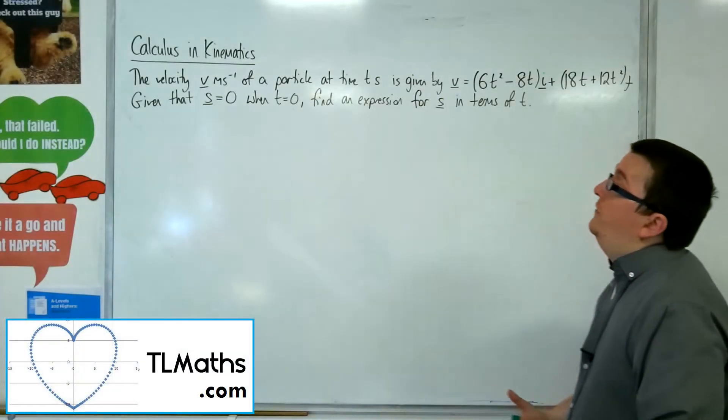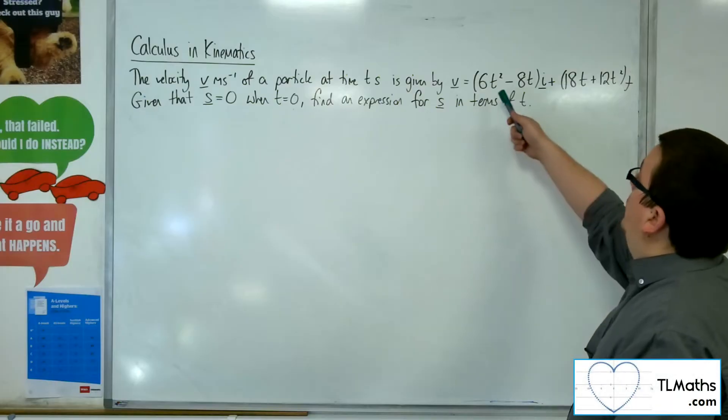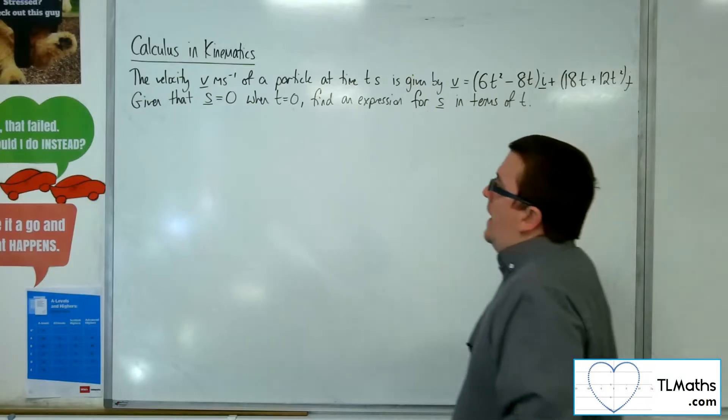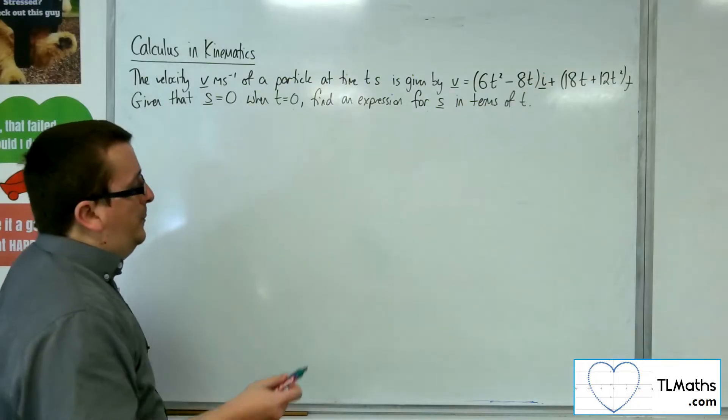In this video, the velocity v metres per second of a particle at time t seconds is given by v equals 6t squared minus 8ti plus 18t plus 12t squared j. Given that s equals 0 when t is 0, find an expression for s in terms of t.